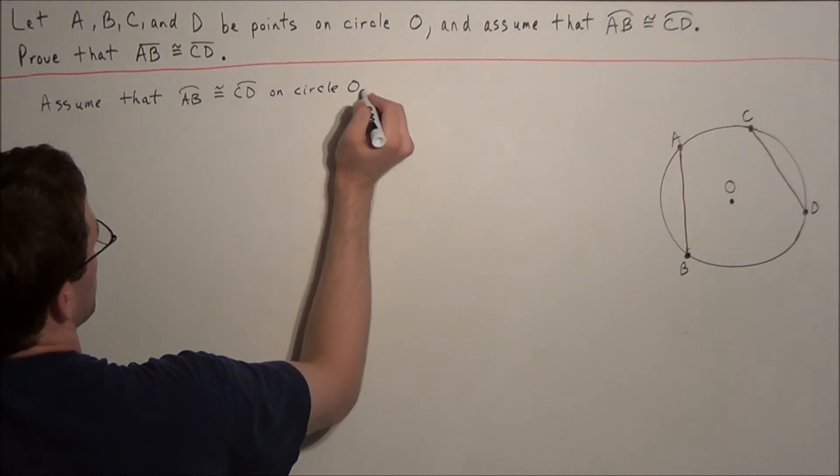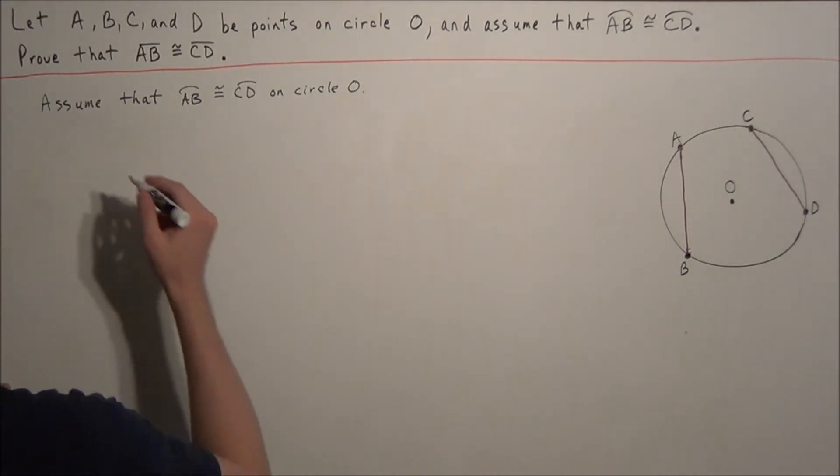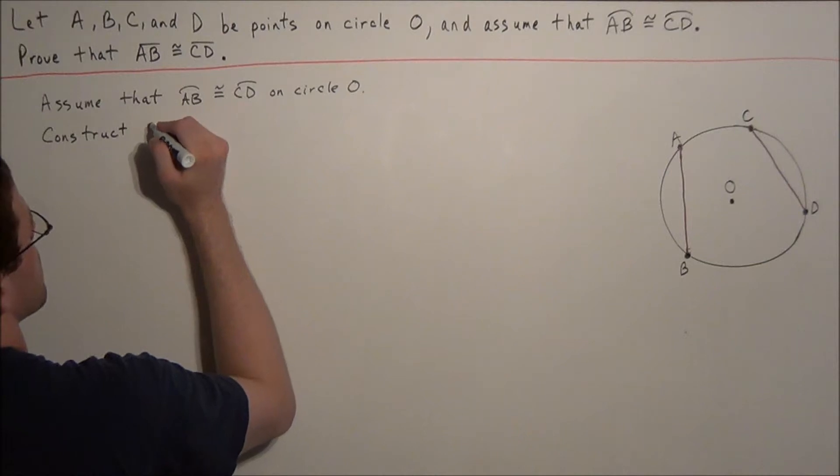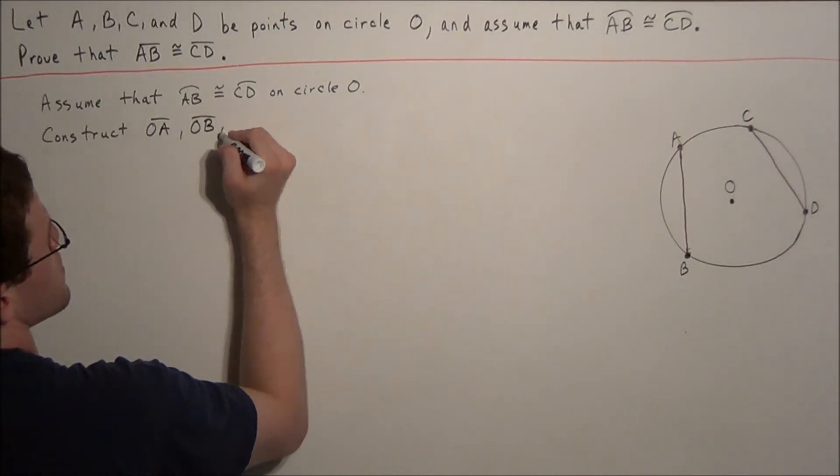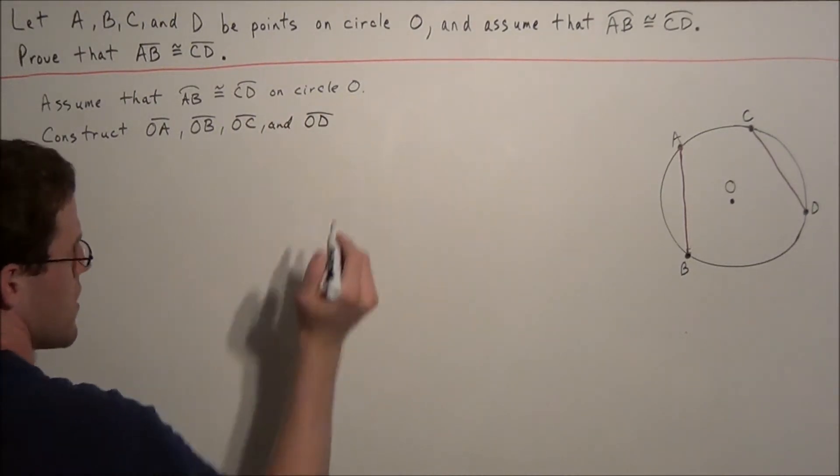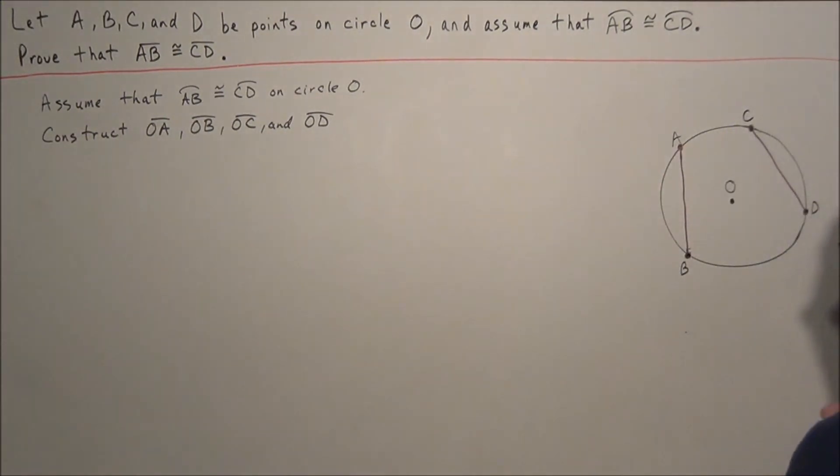So now the next thing we want to do is construct OA, OB, OC, and OD. So now we go over to our diagram and we construct these four line segments. And notice that all four of these line segments are radii.